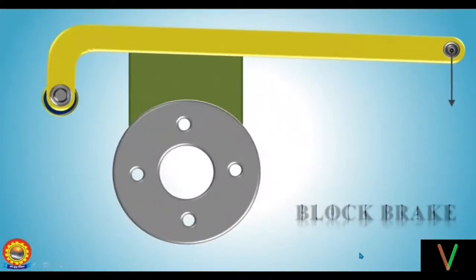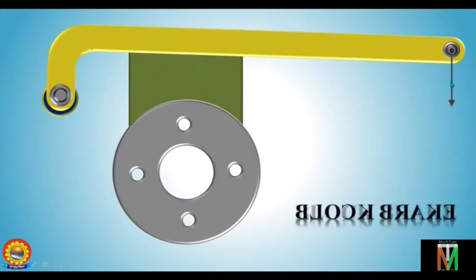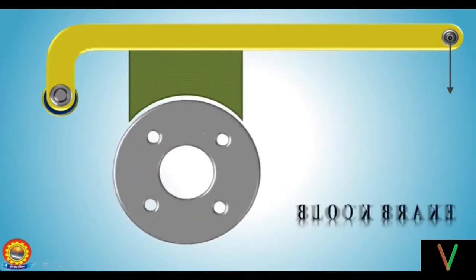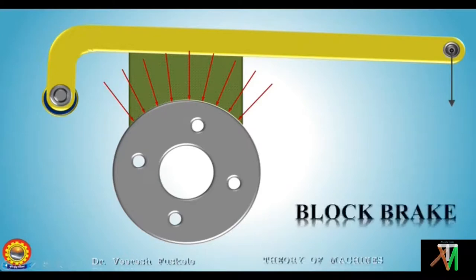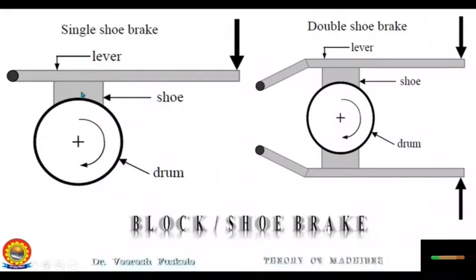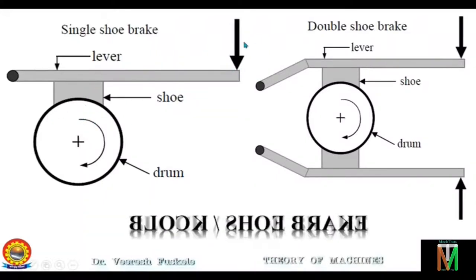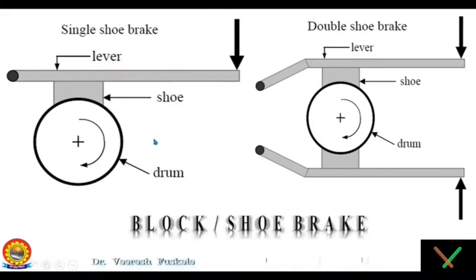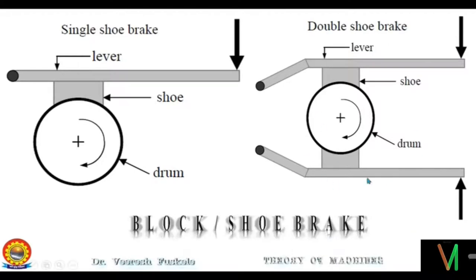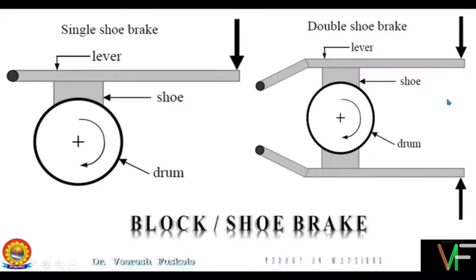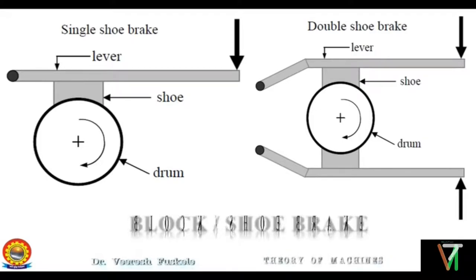Next, let us discuss block brakes. A block or shoe brake consists of a block or shoe which is pressed against the rotating drum, and the force on the drum is increased using a lever. If only one block is used, a side thrust on the bearing of the shaft supporting the drum will act. This is prevented by using two blocks on both sides of the drum, which also doubles the braking torque. A softer material than that of the drum or rim is used to make the blocks so that they can be replaced easily.